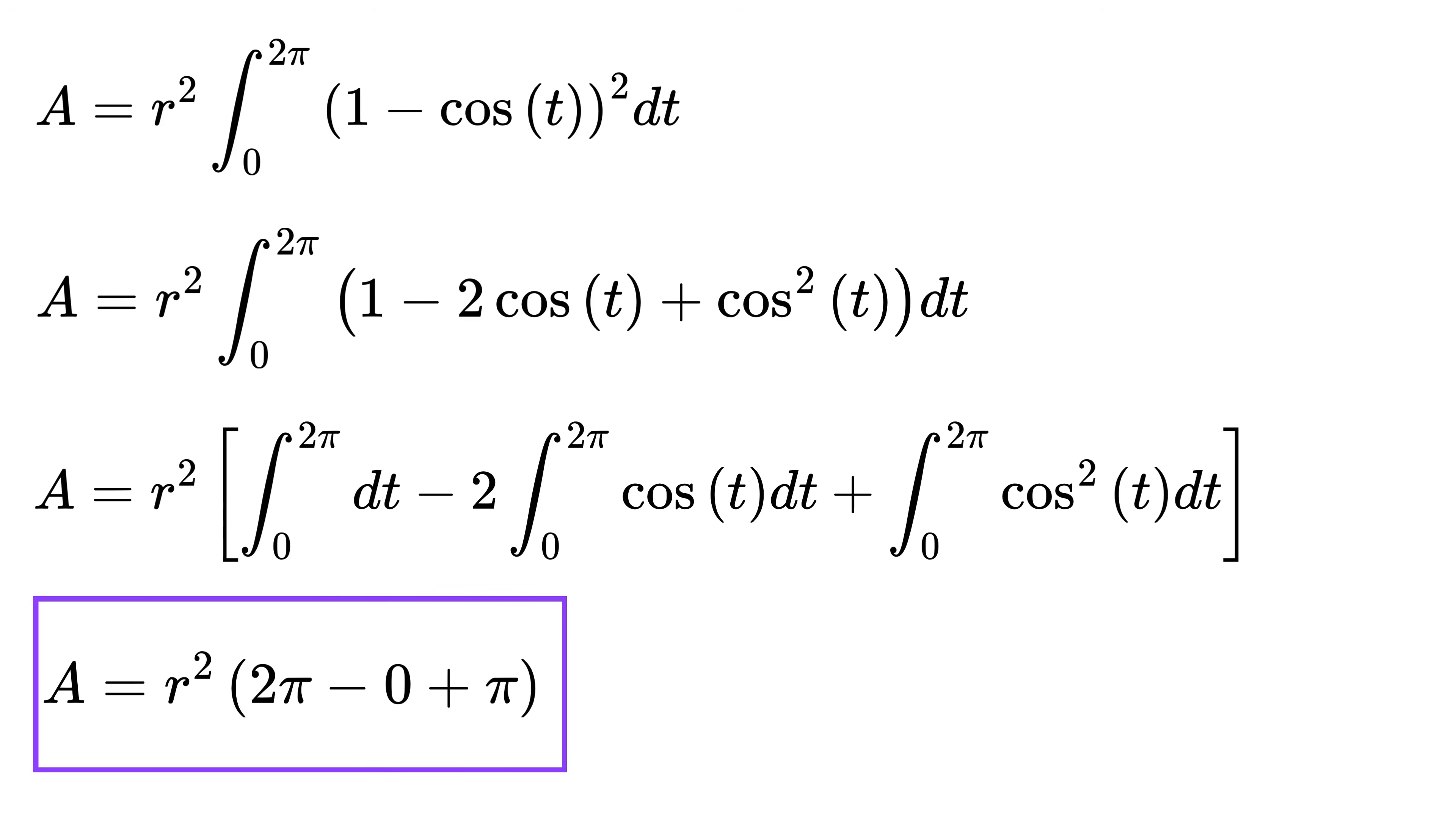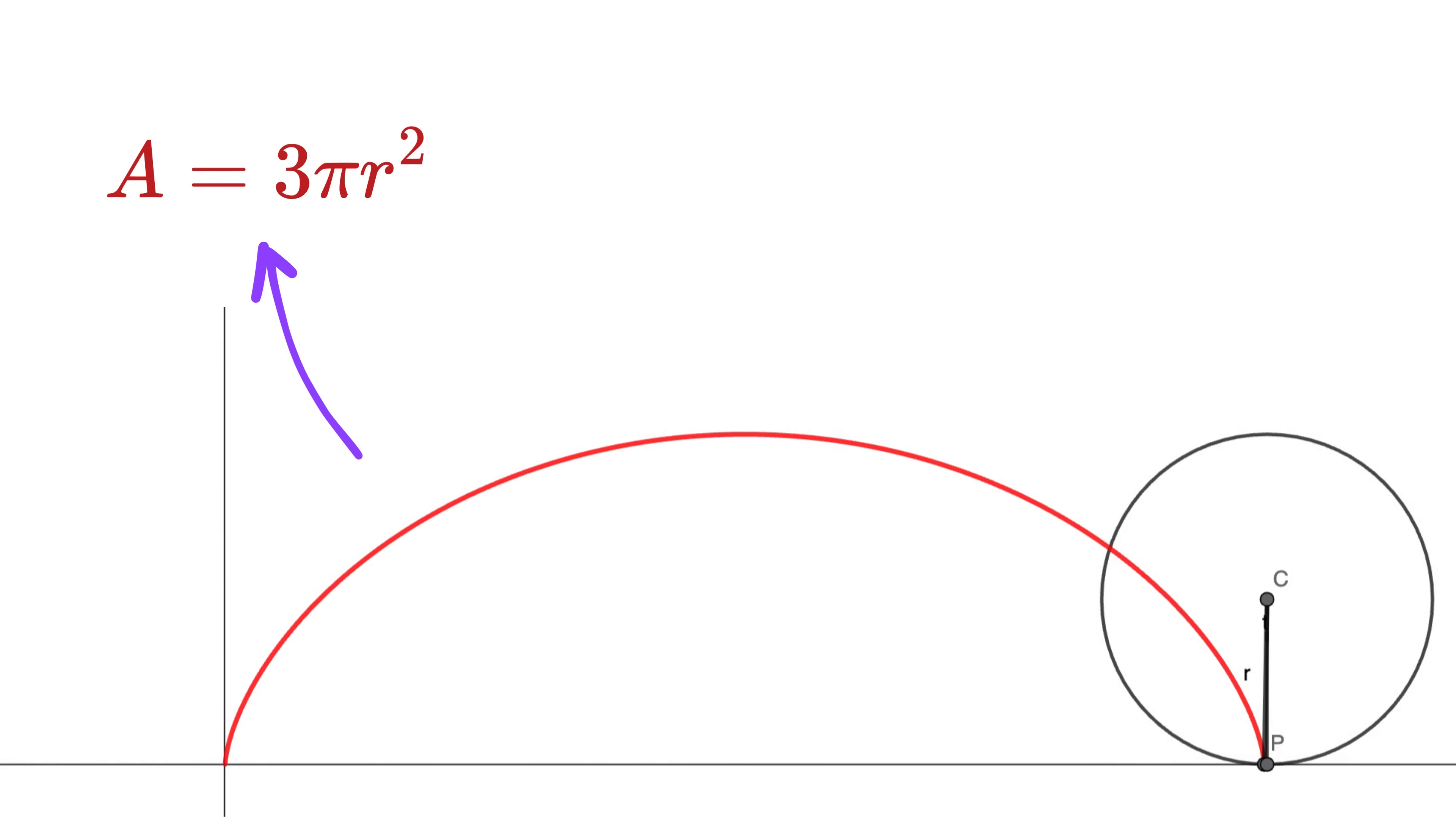Putting these results together, this integral equals 3 times pi. Therefore, the area of this cycloid equals 3 times pi r squared.